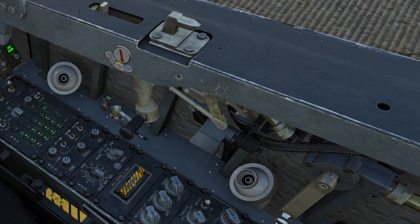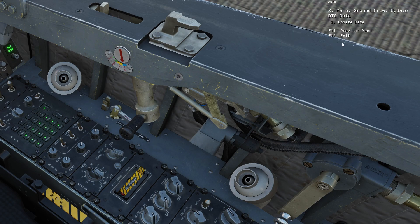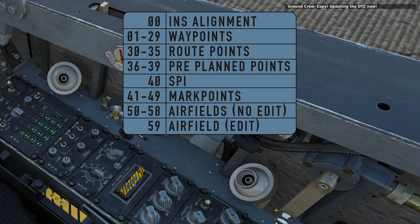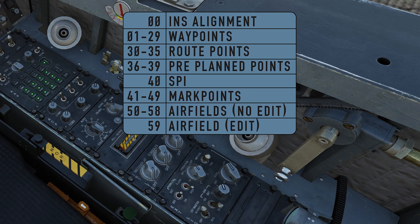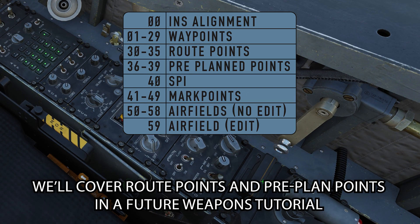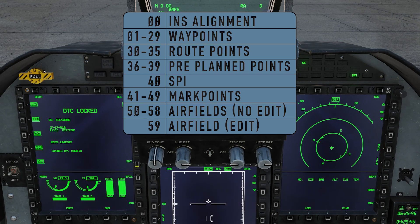If there are waypoints already in the mission, you will need to do an initial DTC update to load all that data into the aircraft. While we do that, let's take a look at the JF-17 navigation database. Specific numbers are reserved for specific purposes. 00 is your INS alignment. 01 to 29 are reserved for navigation — these are your waypoints. 30 to 35 is reserved for route points. 36 to 39 is reserved for pre-planned points. 40 is reserved for your SPI. 41 to 49 is for mark points. 50 to 58 are for airfields closest to your last destination point, and these are not editable. And 59 is an airfield which can be edited.